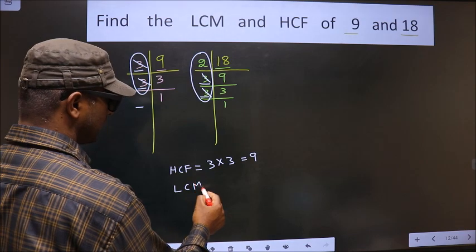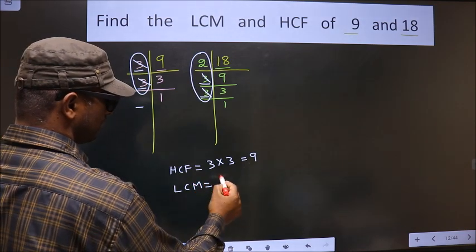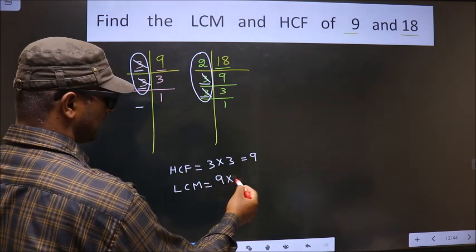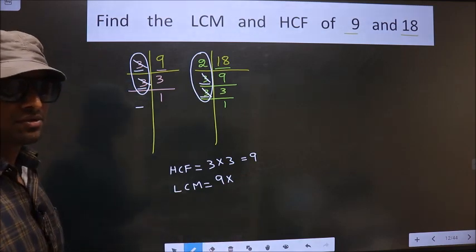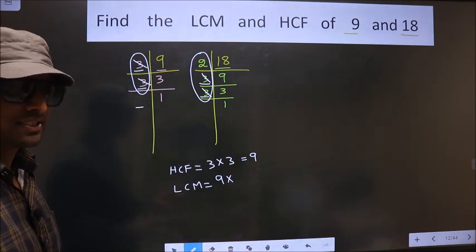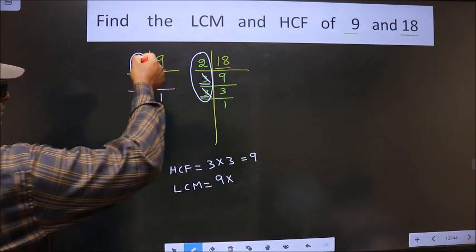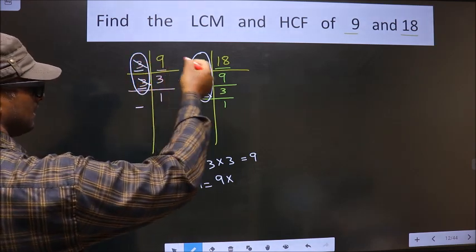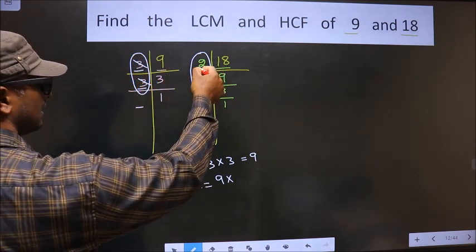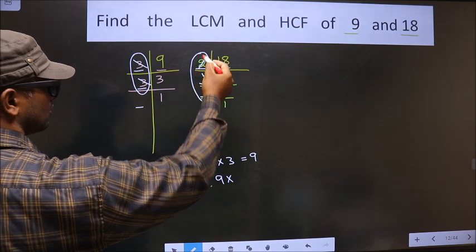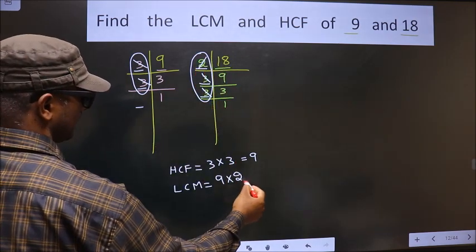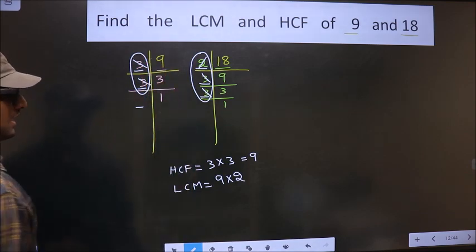Now to get LCM, to the HCF we should multiply by certain numbers. How do we decide those numbers? See, over here each number is cut. So now here, 2 is not cut. So you should cut 2 right here. Now each number has been cut.